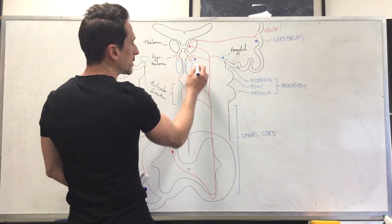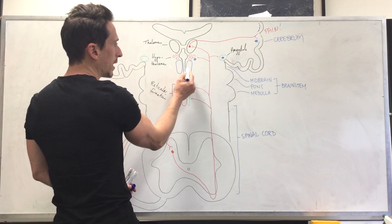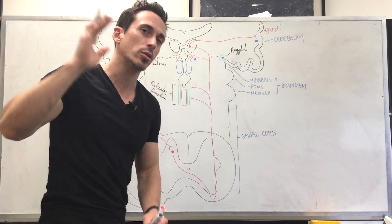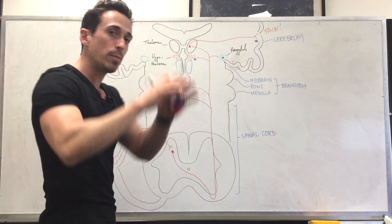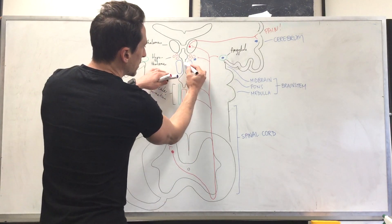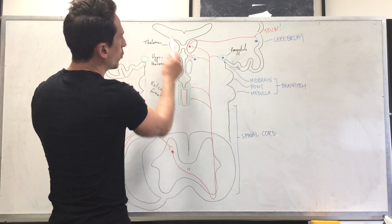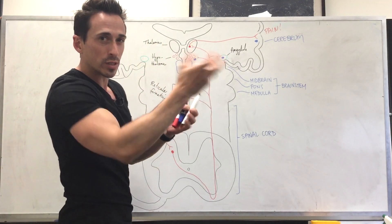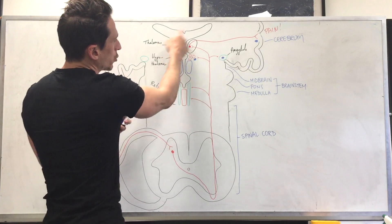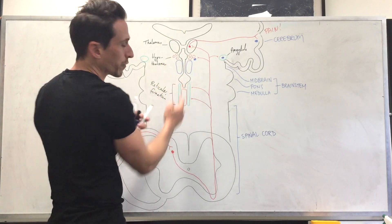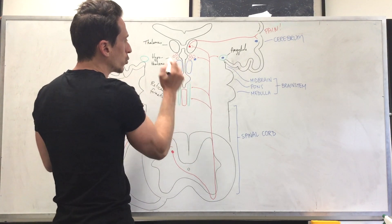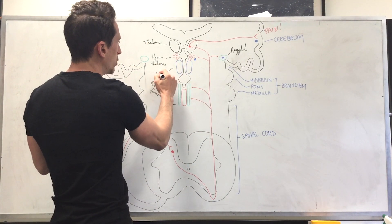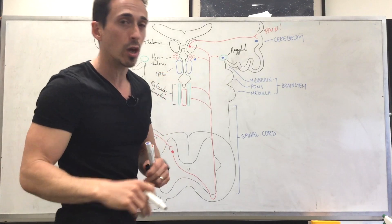And all of them send signals to this area here called the periaqueductal grey matter. Terrible name, but it's called the peri, meaning around, aqueductal. That's the cerebral aqueduct. So we've got the lateral ventricles, hollow insides with cerebral spinal fluid. We've got two lateral ventricles, third ventricle, fourth ventricle, then the tube that connects the third to fourth, that's going to be the aqueduct. So the periaqueductal grey matter, I'll just write PAG or periaqueductal nuclei, which it's now called.